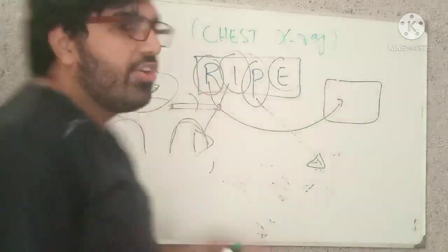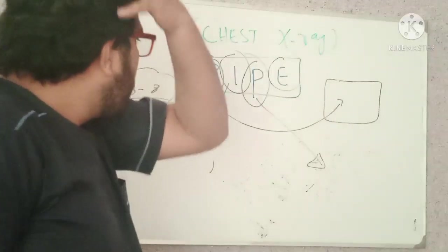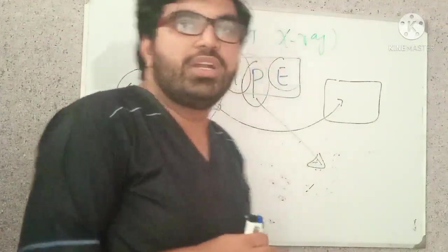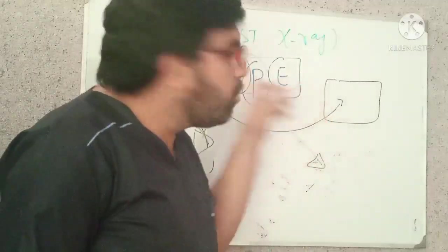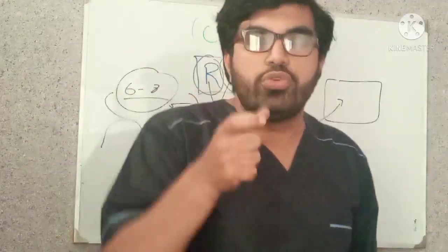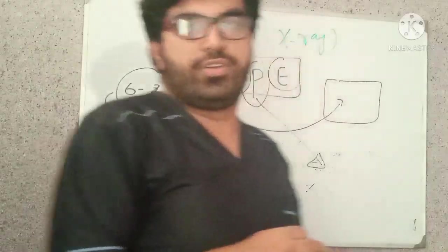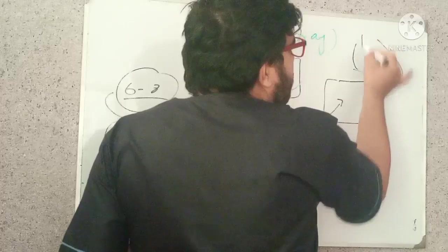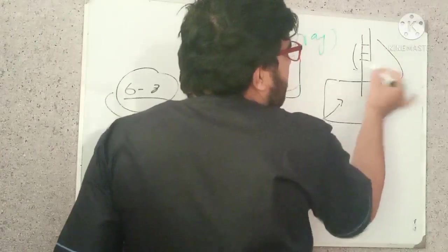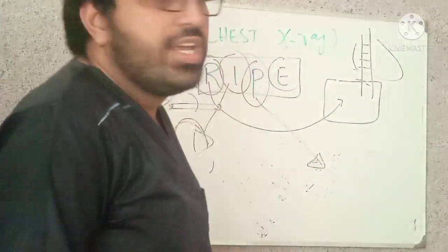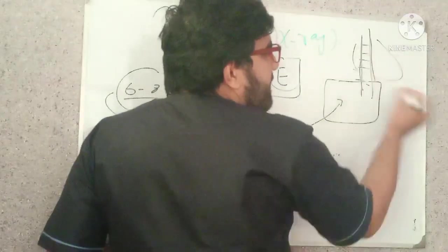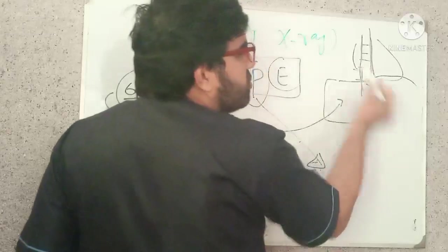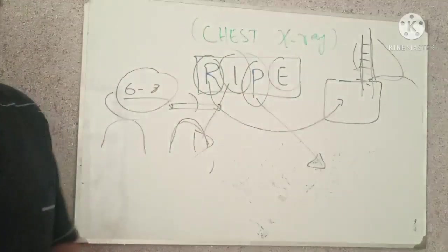For penetration there is no hard and fast rule, but for good penetration you should be able to see the spine behind the heart. If you can trace the spine behind the heart and press the diaphragm up to the spine, this is considered good penetration.